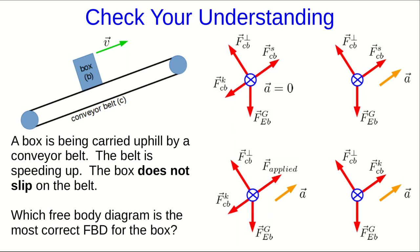Let's think about a box that's being carried uphill by a conveyor belt. So it's going up the slope. And the belt is speeding up. And let's say the box does not slip on the belt. So which of these free-body diagrams is the most correct free-body diagram for this box?